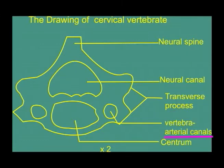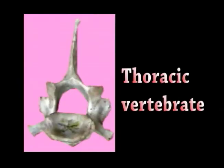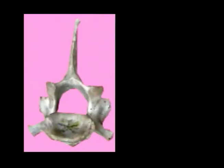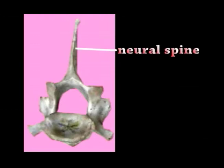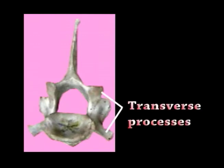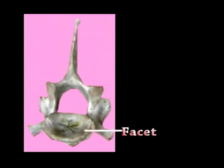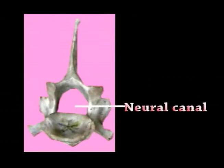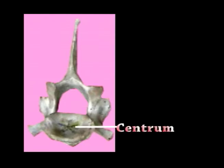Thoracic vertebrae can be identified by the prominent neural spine. Other parts include the vertebral arterial canals and centrum. Parts of thoracic vertebrae include: transverse process, facets, neural canal, and centrum.